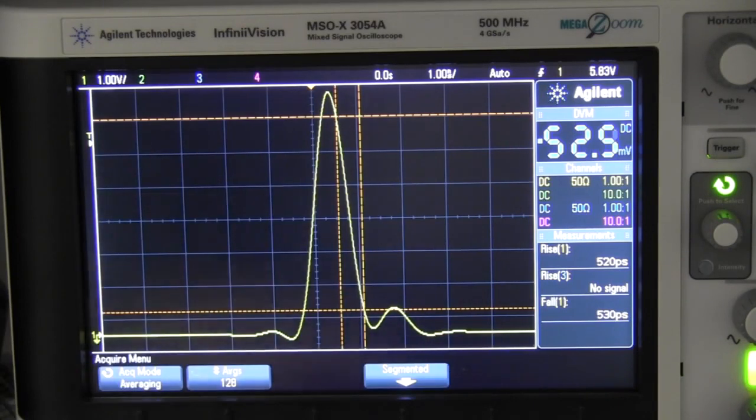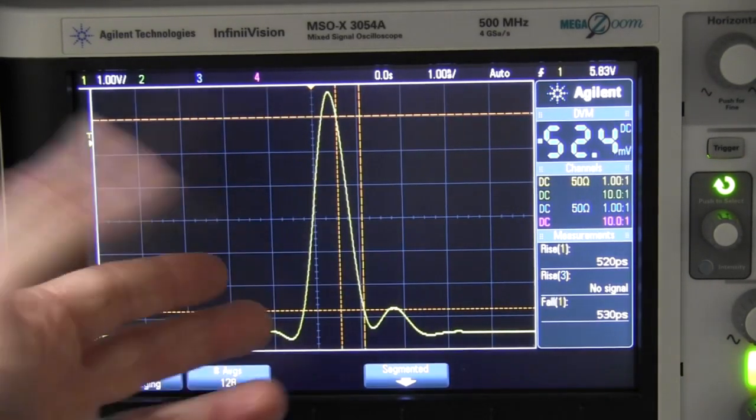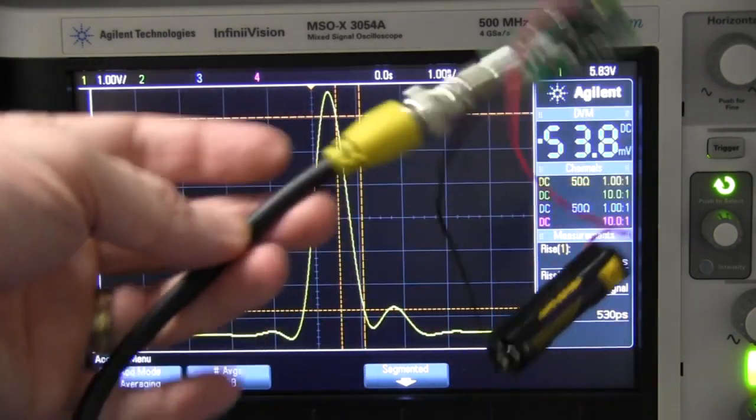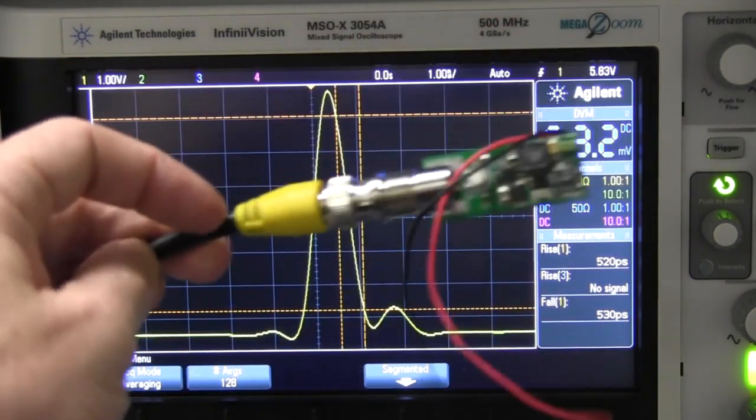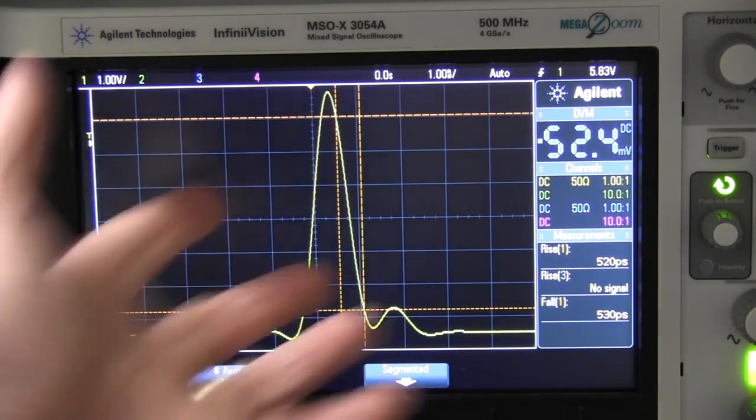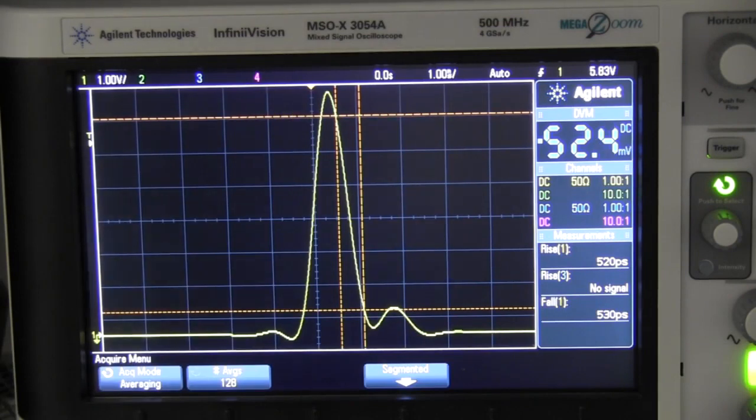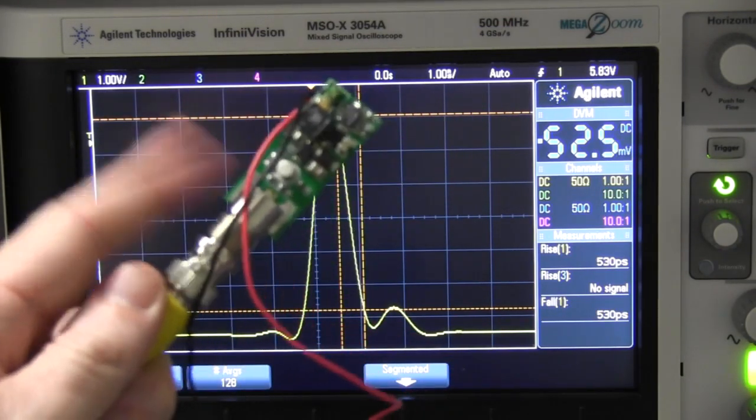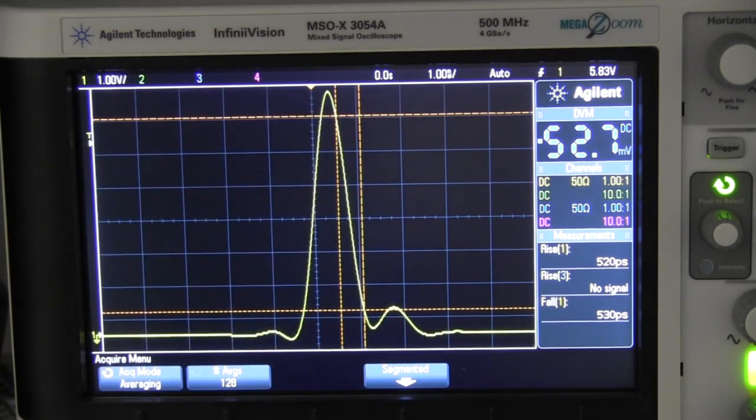There you go. The bandwidth of this scope is at least as good as that. Because we've got things like the coax, a meter of coax cable on the end of this thing, which might contribute a little something. And of course we've got the contribution of the unknown rise time of this thing. But we can say it's at least that good. It's much better than what you would think at minus 3 dB down at 500 megahertz.